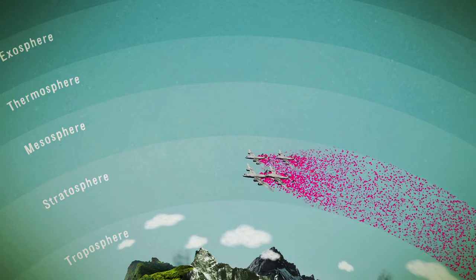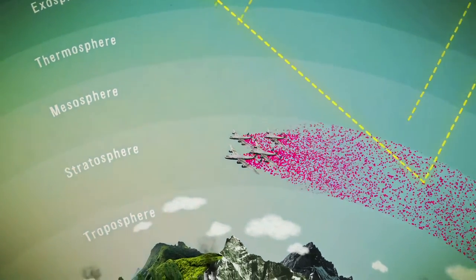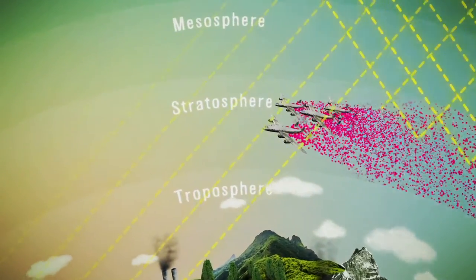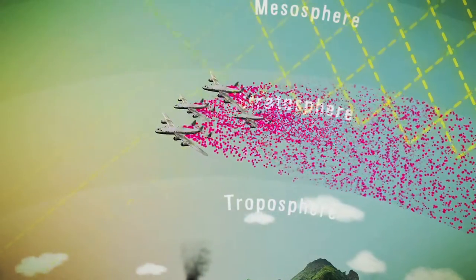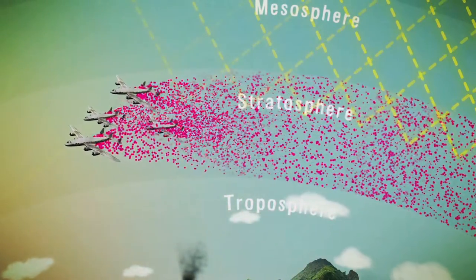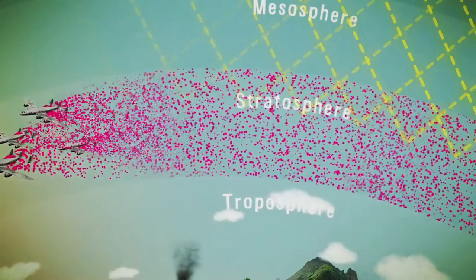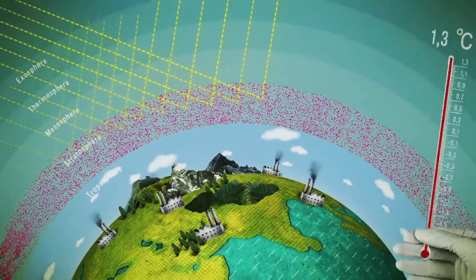The particles would then act as a reflective filter, throwing a percentage of solar radiation back into space, and thereby preventing it from heating up the atmosphere in the first place. The objective is thus to artificially cool down the global climate.